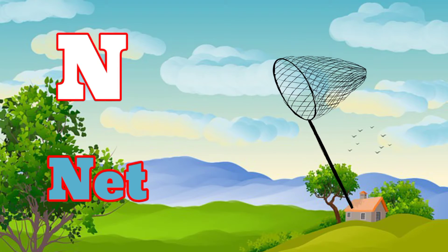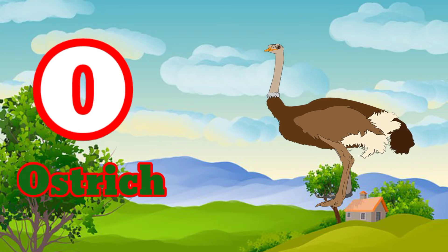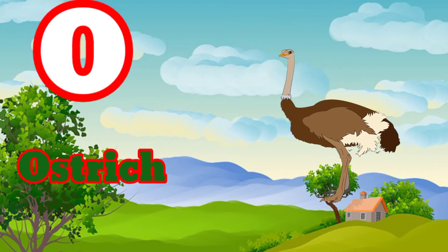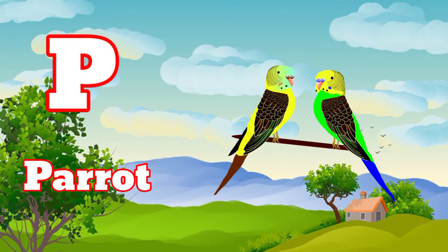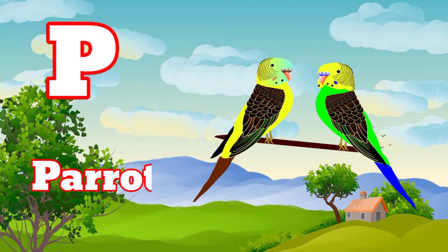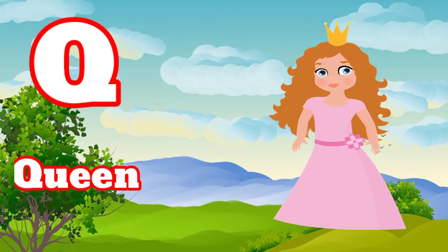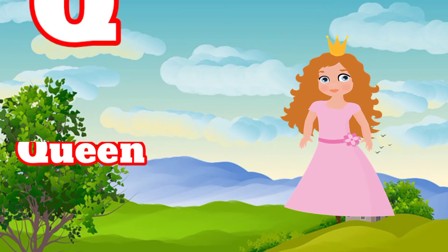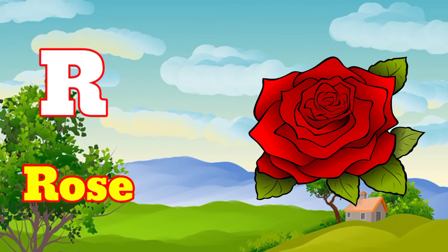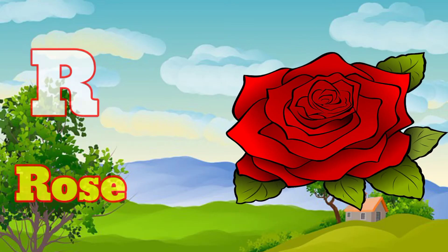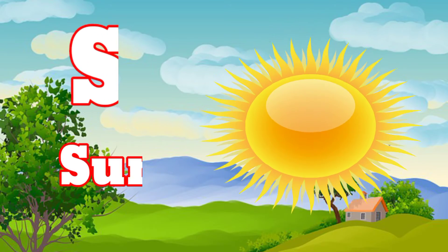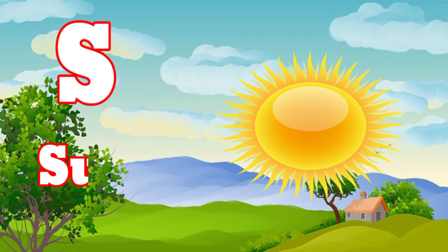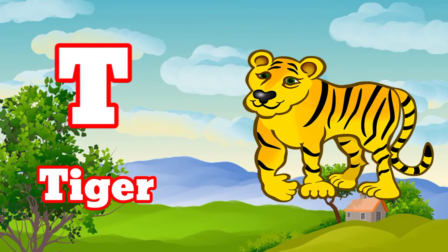O for ostrich, P for parrot, Q for queen, R for road, S for sun, T for tiger.